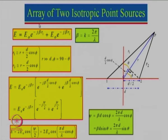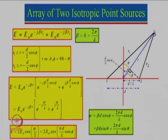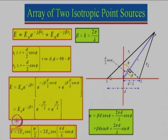We can write the total E field as E₀ times e^(−jβr₁) where r₁ is the distance from source 1, and e^(−jβr₂) from source 2. Since r is much larger than D, we can use the approximation that r₁ ≈ r + (D/2)cosφ and r₂ ≈ r − (D/2)cosφ. If we measure angle θ from the perpendicular axis, then φ + θ = 90°, so we can write φ as 90° − θ.